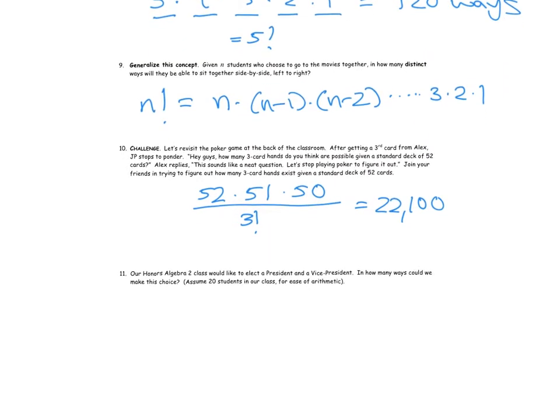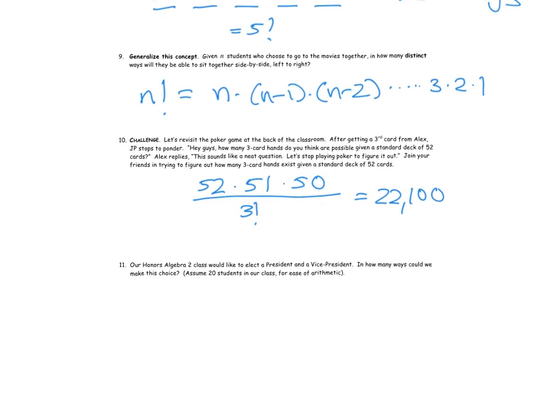Okay, so now, part of the issue for you is going to be distinguishing between when order matters and when order doesn't. So here's another example. Number 11, our Honors Bachelor 2 class would like to elect a president and a vice president. In how many ways could we make this choice? And let's just assume 20 students. So does order matter here?